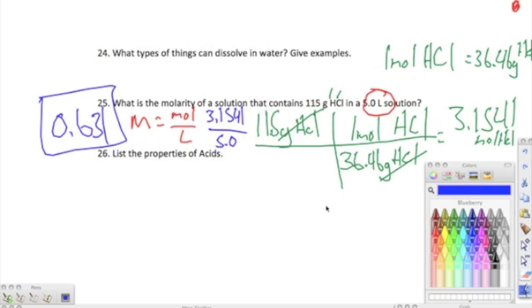Number 26, it says list the properties of acids. Remember that acids turn litmus paper from blue to red. They taste sour. They have a pH between 0 and 7. There are hydrogen ion donors. They conduct electricity, and they react with metals to release hydrogen gas.